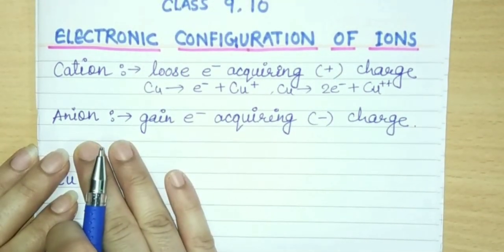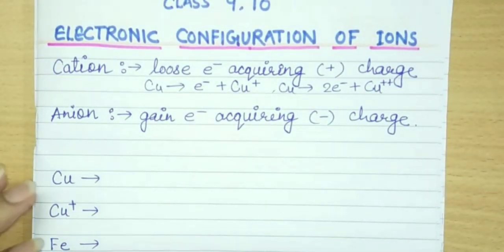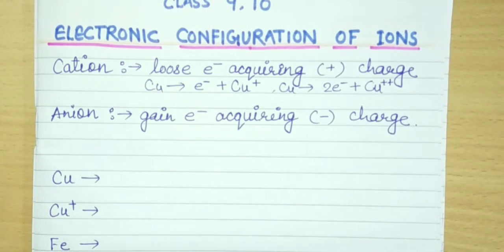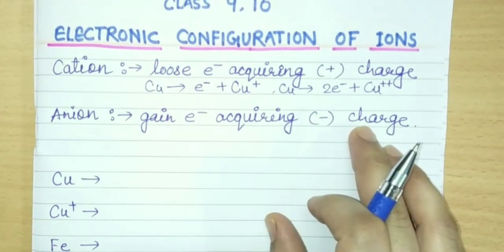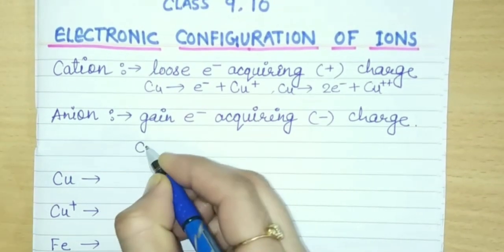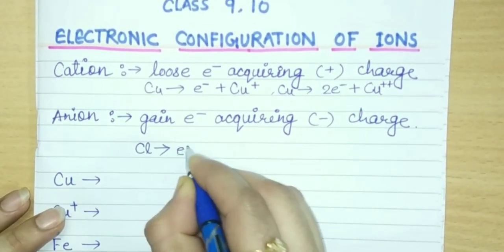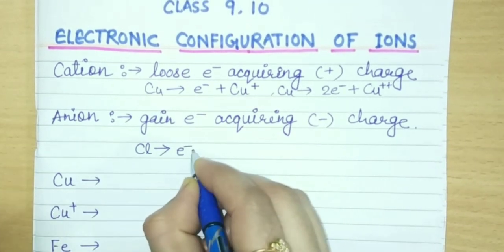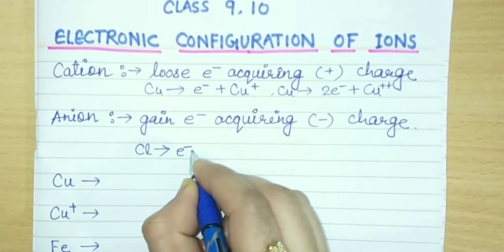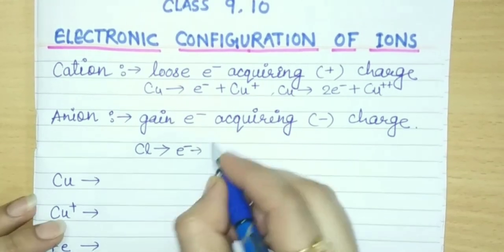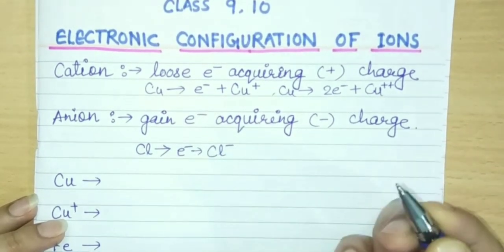When any electron gains, electrons gain acquiring negative charge. Let's take an example of chlorine. If chlorine has gained an electron, and that one electron is added to it, then what is happening? The configuration will be Cl negative.